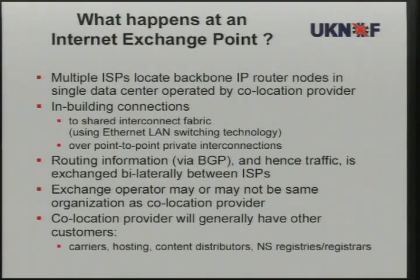Internet interconnect principles — what happens at an internet exchange point? Basically, at your typical internet exchange there will be a bunch of internet service providers who have equipment and routers in the same building, usually a data centre operated by a co-location provider. Within that building, these ISPs connect together. Sometimes they run a direct wire between them; more commonly there will be a shared interconnect fabric, usually one or more Ethernet switches. They exchange routing information using BGP — Border Gateway Protocol — and the exchange of routing information leads to the exchange of traffic, done on a bilateral basis.